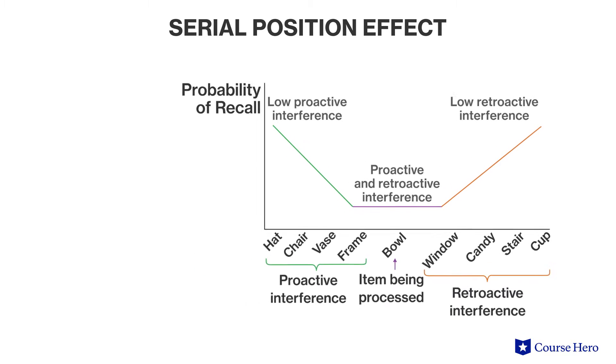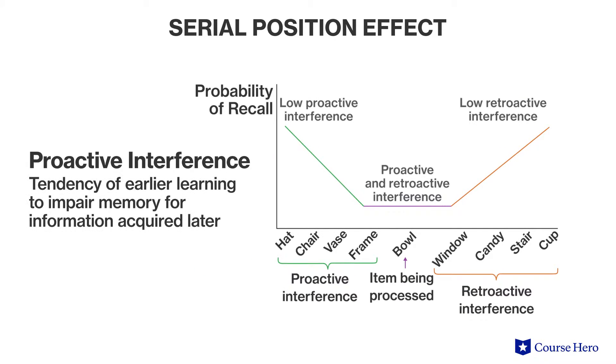In proactive interference, there is a tendency of earlier learning to impair memory for information acquired later. So as people attempt to remember the first words on a list, often by rehearsal, this interferes with them learning the items that are later on the list.